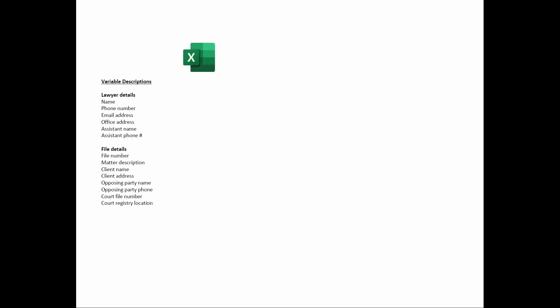The premise of the form building spreadsheet is that each client matter has its own tab of the spreadsheet, and on that tab there is a list of variables. That list of variables is mostly up to the user to define and depends on the user's personal situation. Then each variable must be assigned a field code, which is wrapped in curly brackets. The user can decide what the field codes will be, but they must be wrapped in curly brackets.